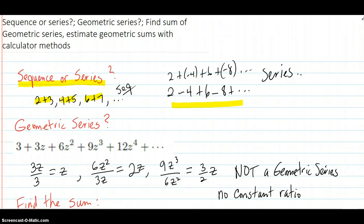It's not geometric because negative 4 divided by 2 is negative 2. But 6 divided by negative 4 is not negative 2. So there is not a constant ratio. So, not geometric.